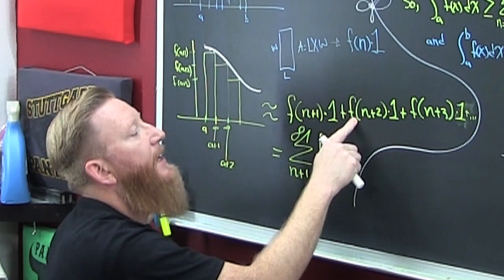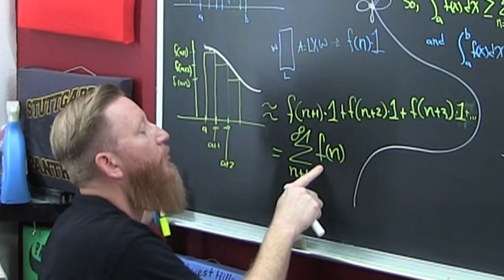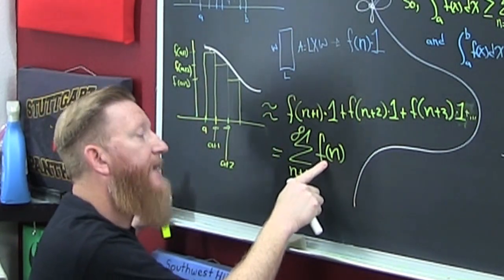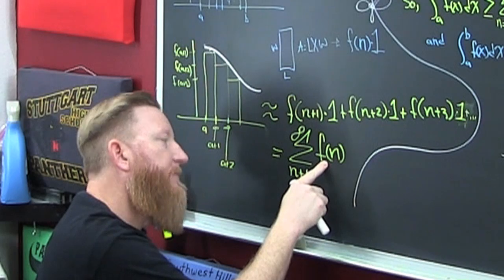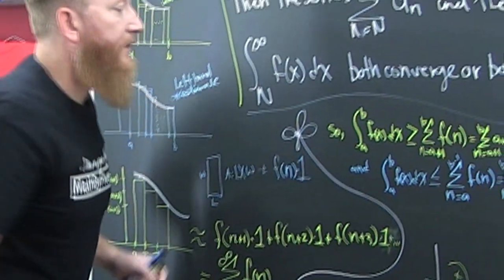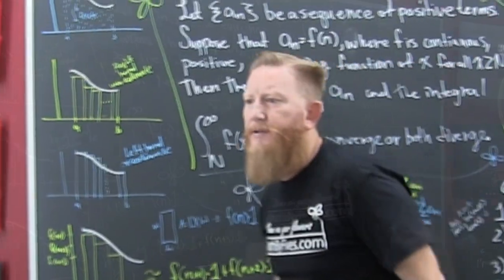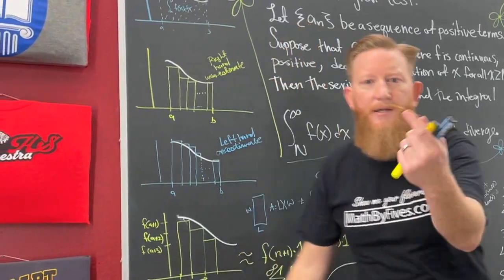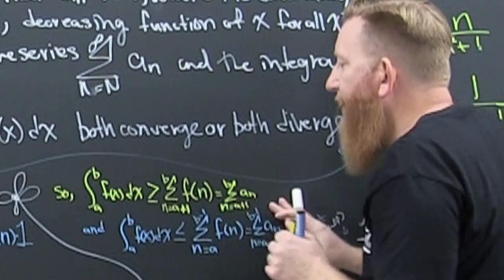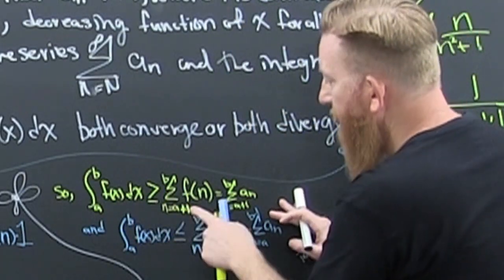Height times width for each rectangle gives us the sum from n+1 to infinity of f(n), but that is the series governed by that sequence. With that rationale, the integral — the area under the curve — is bigger than the underestimate given by the sum starting at the plus-one case.